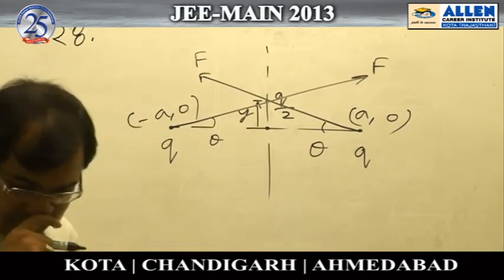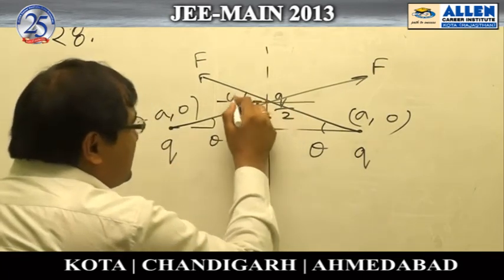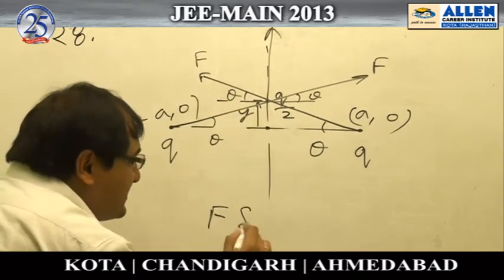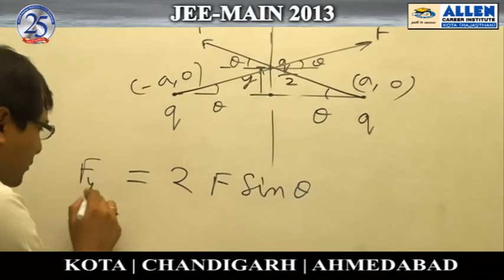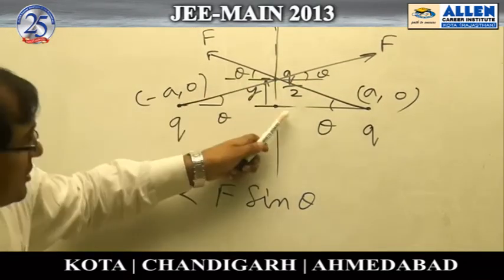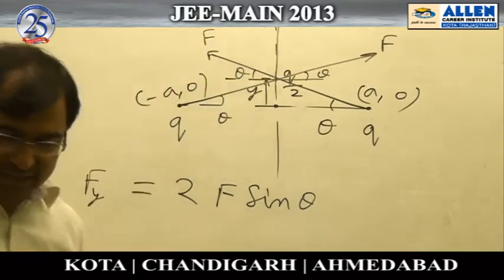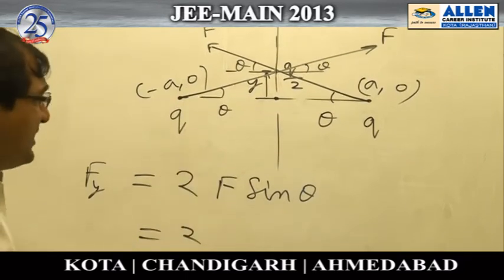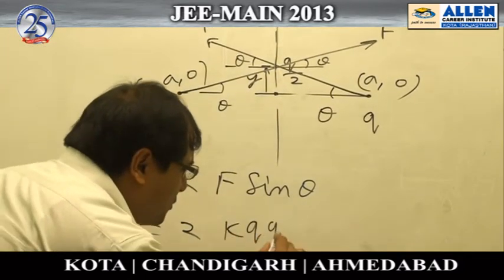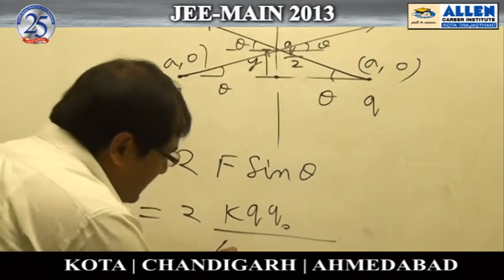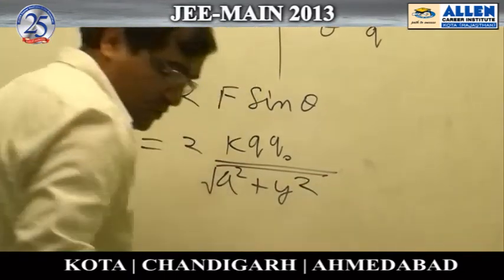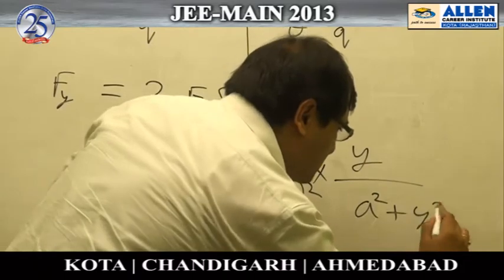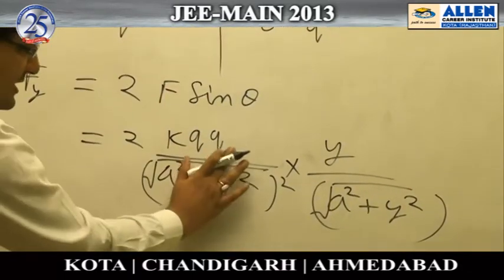The angle is theta, so the net force acting on this charge particle is 2F·sinθ. Putting in the values, we get 2kQq₀ divided by (a² + y²) times sinθ, where sinθ equals y divided by √(a² + y²). The charge q₀ is Q/2.